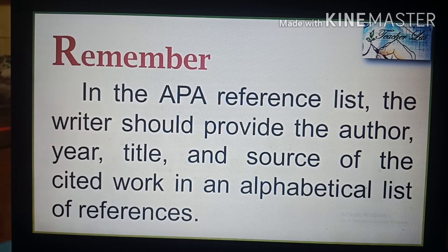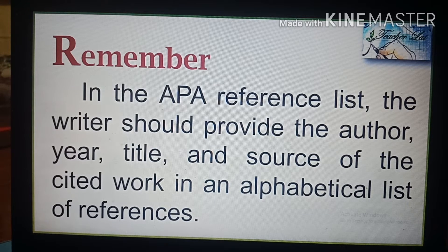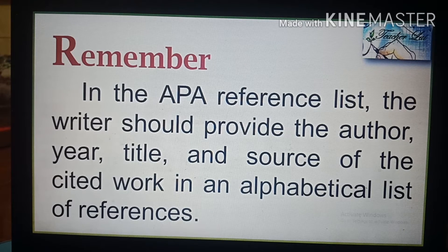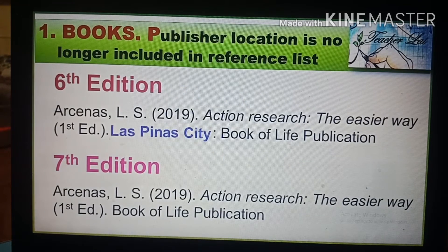In the APA reference list, the writer should provide the author, year, title, and source of the cited work in an alphabetical list of references. If a reference is not cited in the text, it should not be included in the reference list. The reference format varies depending on the document type — whether a journal article or book — but generally always follows the same pattern of author, date, title, and source.